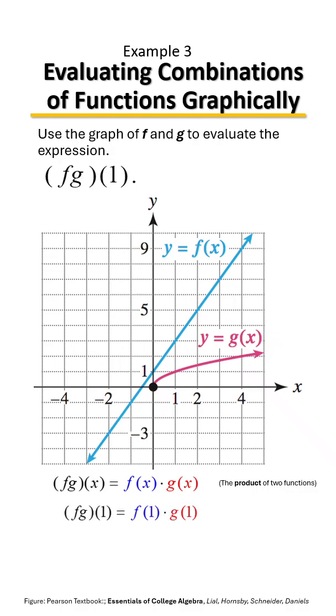So let's go ahead and proceed by finding f of 1. So that's my blue graph. I'm going to go over 1. I'm not on the blue graph. To get on the blue graph, I need to go up 1, 2, 3. So f of 1 equals 3.